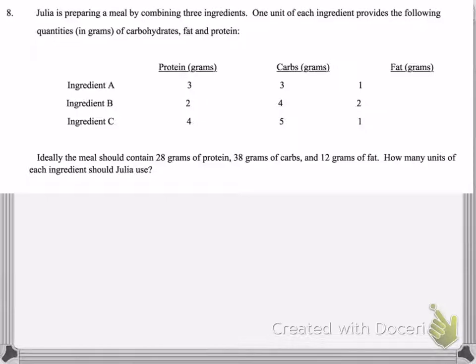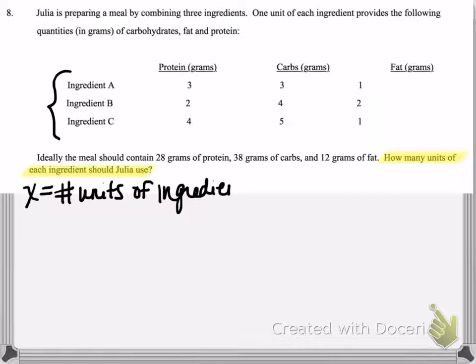So you want to begin by identifying what your unknowns are, what are the variables in the problem. And many times you can figure that out by looking at the question. So the actual question is this last sentence: how many units of each ingredient should Julia use? We have three ingredients, A, B, and C. So those are going to be our variables. X will be the number of units of ingredient A, Y will be the number of units of ingredient B, and Z will be the number of units of ingredient C. So now we have our variable key.